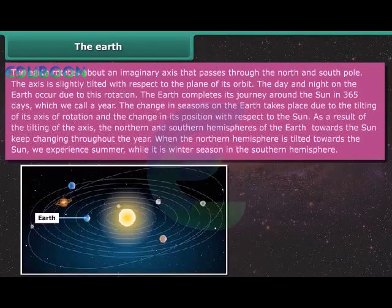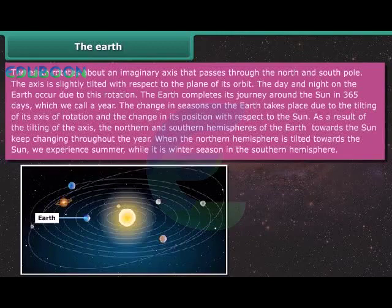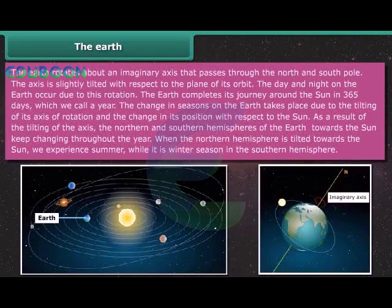The Earth rotates about an imaginary axis that passes through the North and South Pole. The axis is slightly tilted with respect to the plane of its orbit. The day and night on the Earth occur due to this rotation. The Earth completes its journey around the Sun in 365 days which we call a year. The change in seasons on the Earth takes place due to the tilting of its axis of rotation and the change in its position with respect to the Sun. As a result of the tilting of the axis, the northern and southern hemispheres of the Earth towards the Sun keep changing throughout the year. When the northern hemisphere is tilted towards the Sun we experience summer while it is winter season in the southern hemisphere.